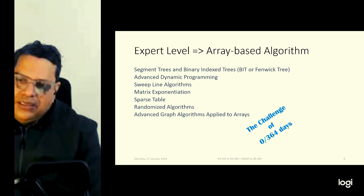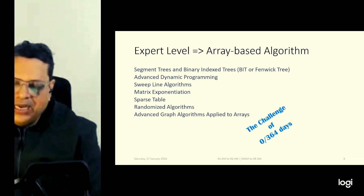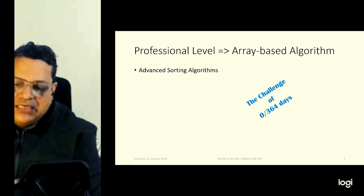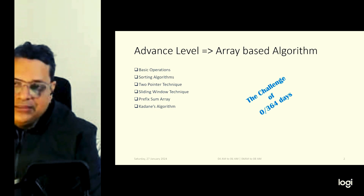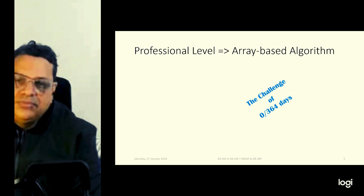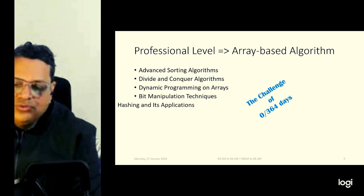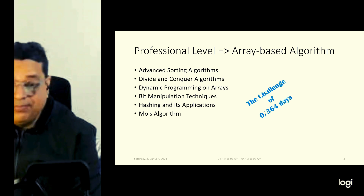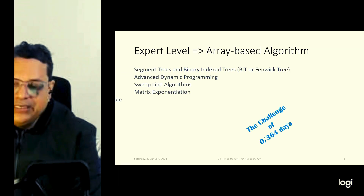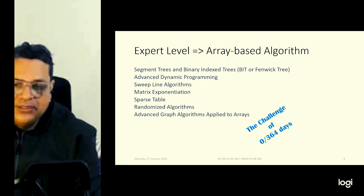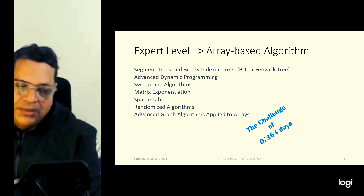To recap: under the Advanced Level we cover basic operations, sorting algorithms, two-pointer technique, sliding window technique, prefix sum, and Kadane's algorithm. Under the Professional Level we cover advanced sorting algorithms, divide and conquer, dynamic programming on arrays, bit manipulation, hashing and its application, and Mo's algorithm. Under the Expert Level we cover segment trees and Binary Indexed Tree, advanced dynamic programming, sweep line algorithm, matrix exponentiation, sparse table, randomized algorithms, and advanced graph algorithms applied to arrays.